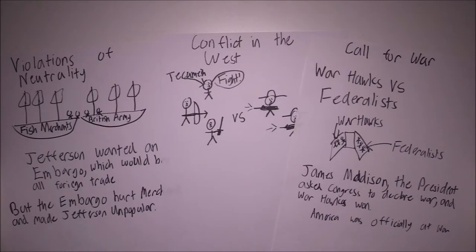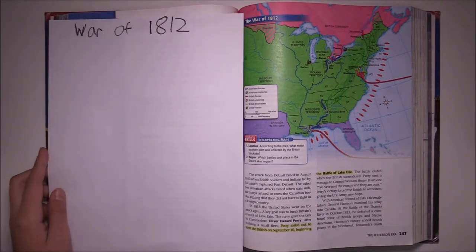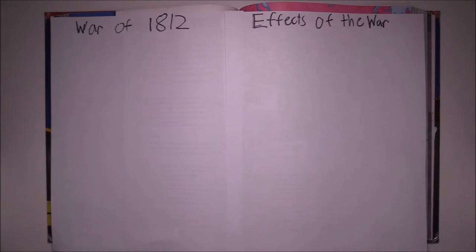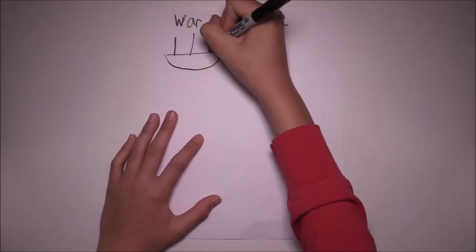Now on to Section 4. Section 4 is made up of two sections, the War of 1812 and the effects of the war. First, we will cover the events of the war.